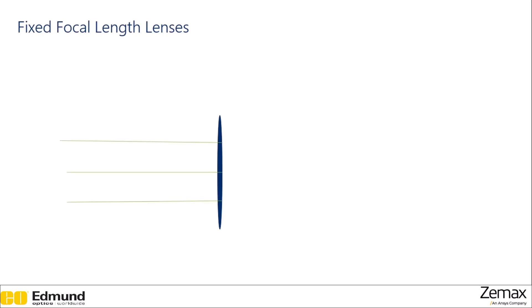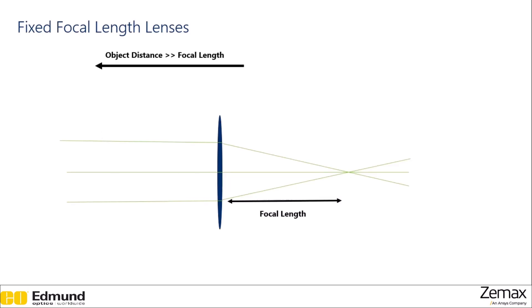If we look at this, we have a set of rays that comes in parallel to the lens, focused to some point. The distance from the lens to that point is known as our focal length. For purposes of this section, we're going to be assuming that the object distance is much, much greater than the focal length. What this allows us to do is make the paraxial approximation. For this particular case, it also means that the sensor will be placed at the focal plane, because the focal plane and the image plane are in the same place. This only occurs when the object distance is much, much greater than the focal length, so this approximation cannot be made in all cases.